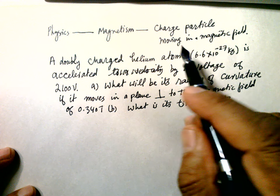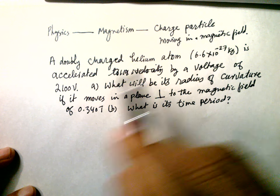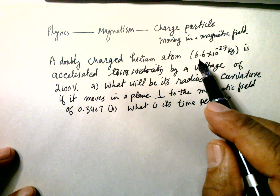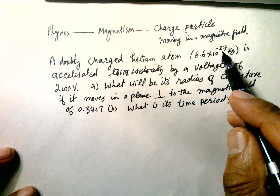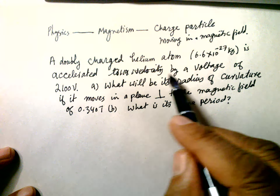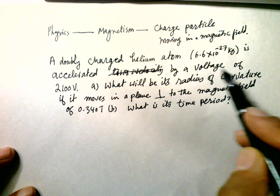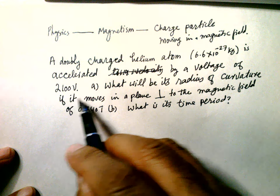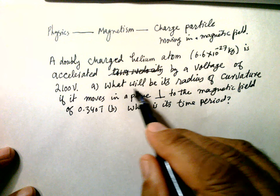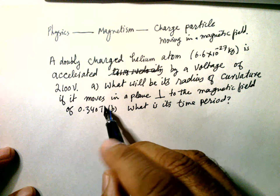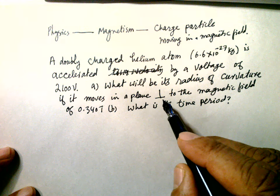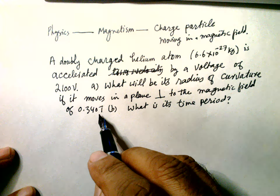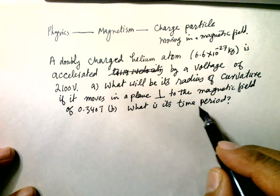Hello, physics — magnetism, charged particle moving in a magnetic field. The problem: a doubly charged helium atom whose mass is 6.6×10⁻²⁷ kg is accelerated by a voltage of 2100 volts. Question A: what will be its radius of curvature if it is moving in a plane perpendicular to a magnetic field of 0.34 tesla? Question B: what will be its time period?